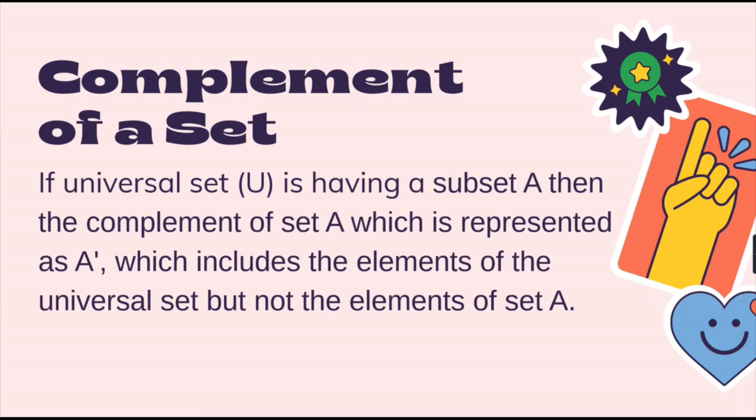If the universal set U is having a subset A, then the complement of set A, which is represented by A apostrophe (read as A complement), includes the elements of the universal set but not the elements of set A.